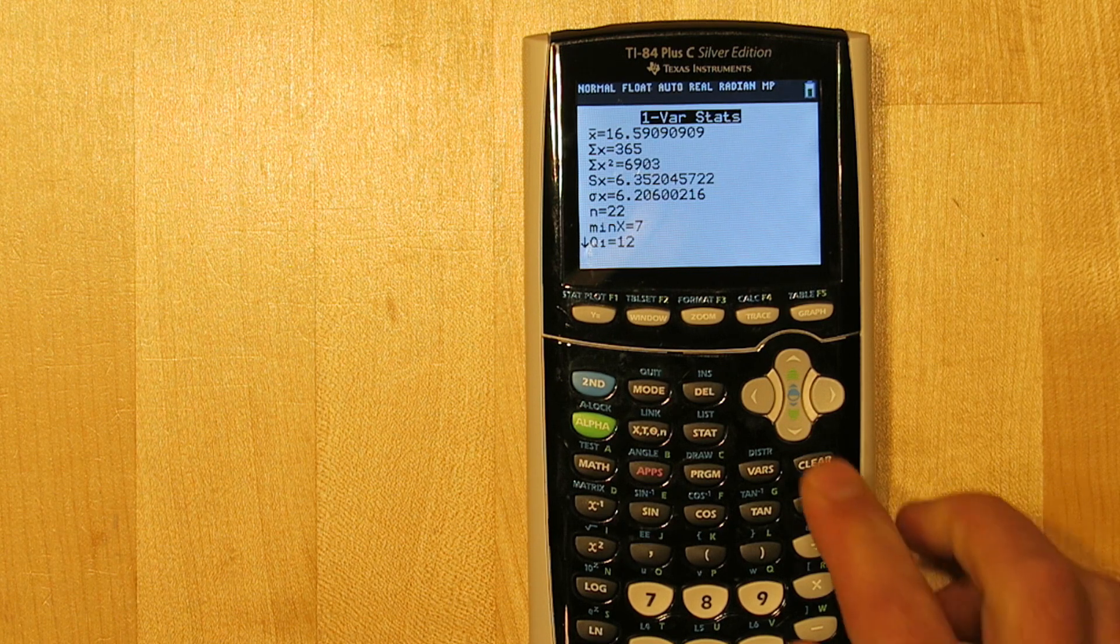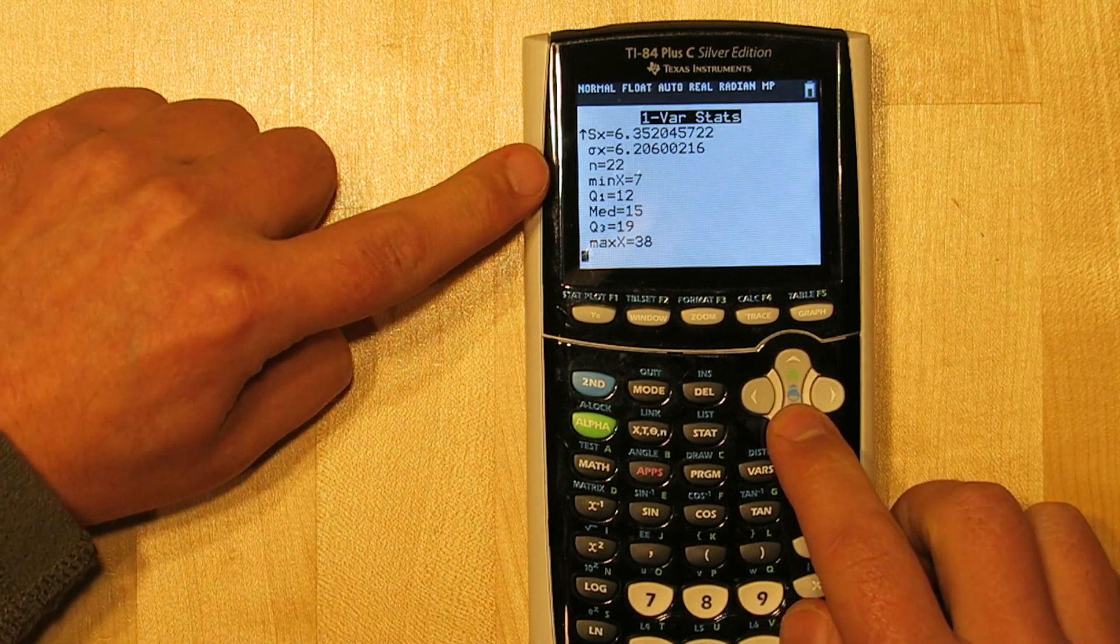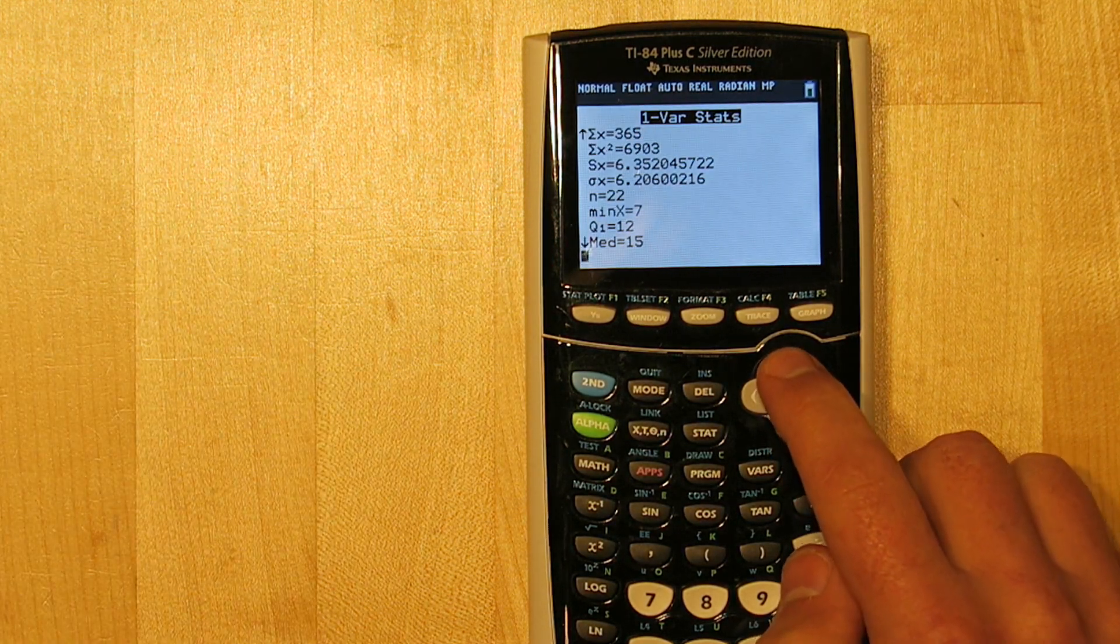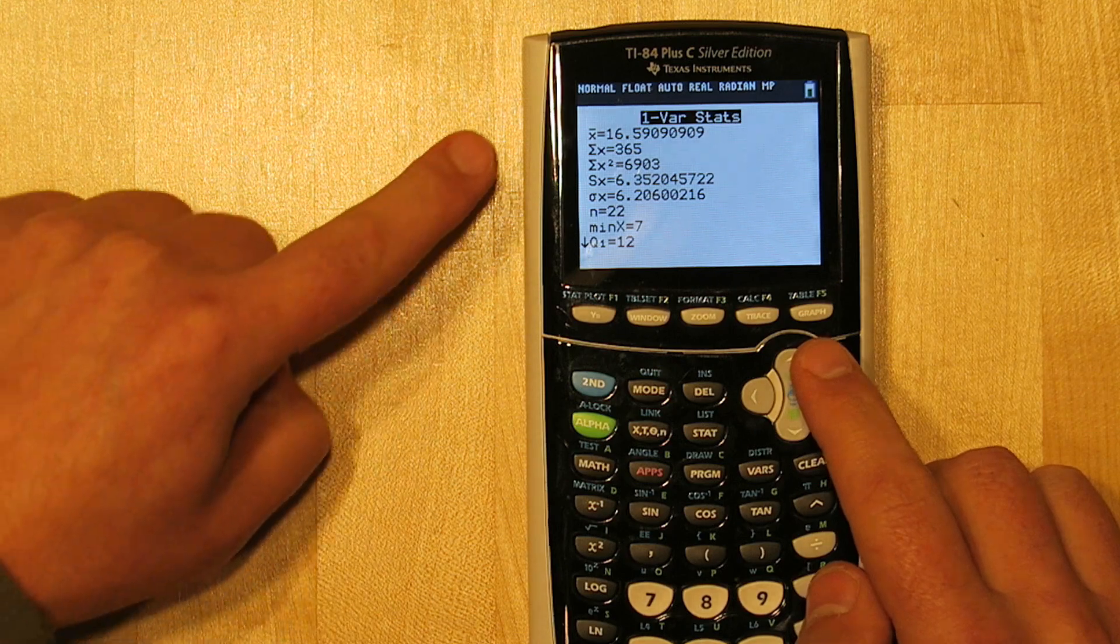If we push down, here's the five number summary. The minimum, quartile 1, median, quartile 3, and the maximum. You also have other useful information, like the mean right at the top.